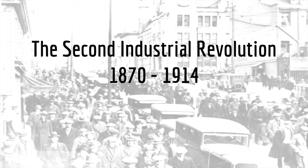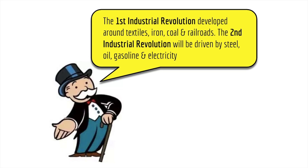Hi, it's Mr. Ramage and this video lesson is going to take a quick look at the second industrial revolution, which takes place around the year 1870 to about 1914. This is where the industrial revolution that we've previously talked about sort of shifts gears and transforms into this sort of second revolution of inventions and products. This isn't going to be a very deep dive, but we are going to cover some major topics.